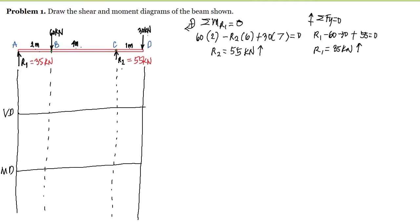At point A we have a shear of 35 kilonewtons — since R1 is upward it is positive, so we plot 35. From point A to point B there is no load, so the shear is constant at 35. At point B, the 60 kN downward load drops the shear: 35 minus 60 gives us negative 25 kilonewtons.